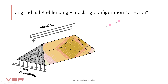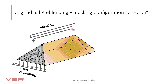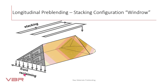The chevron system is the most common and simplest pre-blending type. Longitudinal layers are placed by a to-and-fro stacker movement over the pile until the full height is reached. This material will afterwards be reclaimed in slices transversal to the pile by means of a front-acting reclaimer.